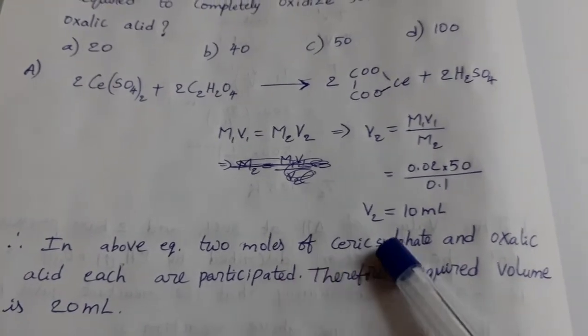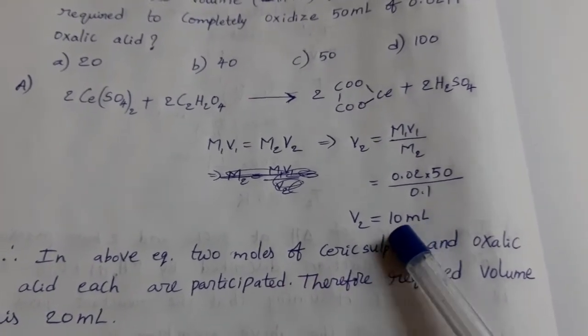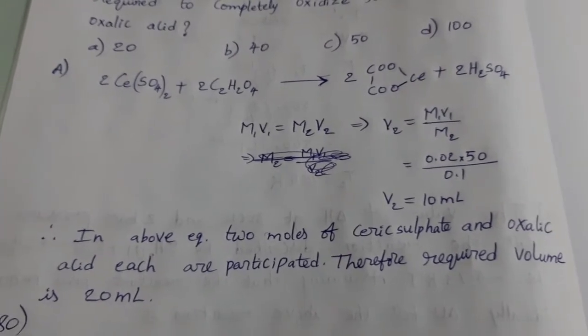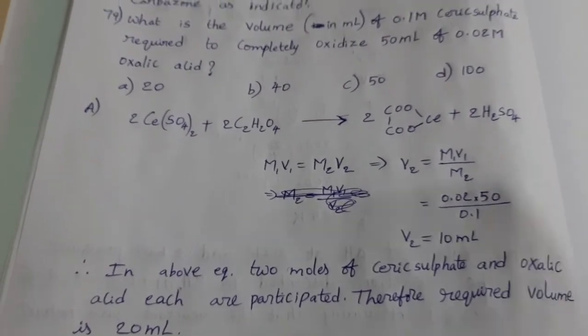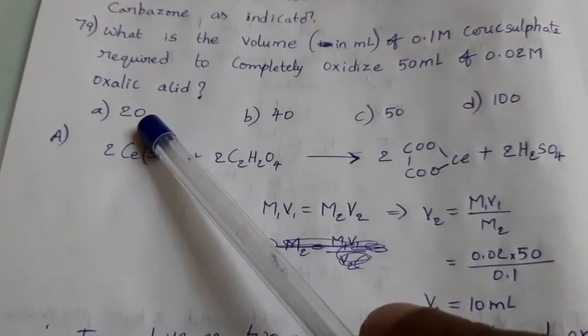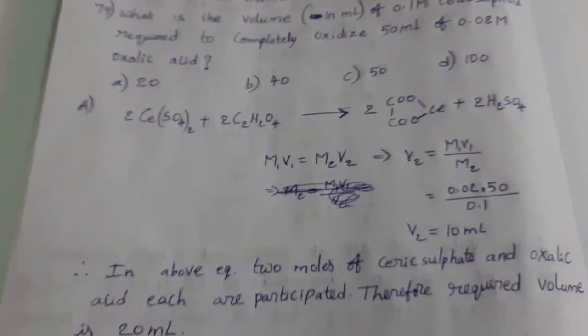required volume to oxidize this oxalic acid is 20 ml. Generally students do mistake, answer is 10 ml, that is wrong option. Correct answer is 20 ml. Option A is the answer.